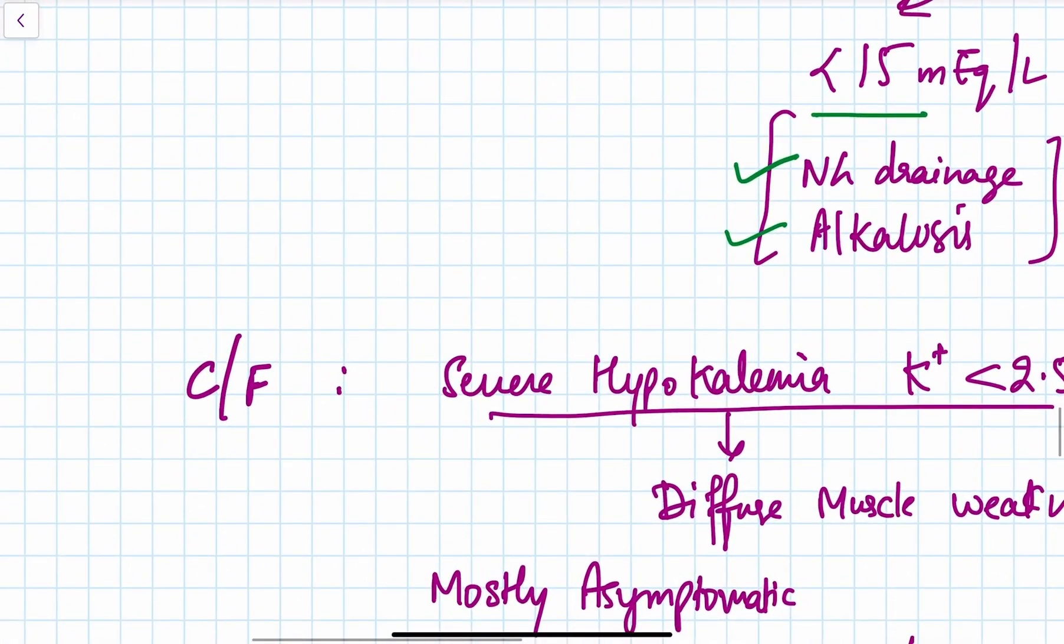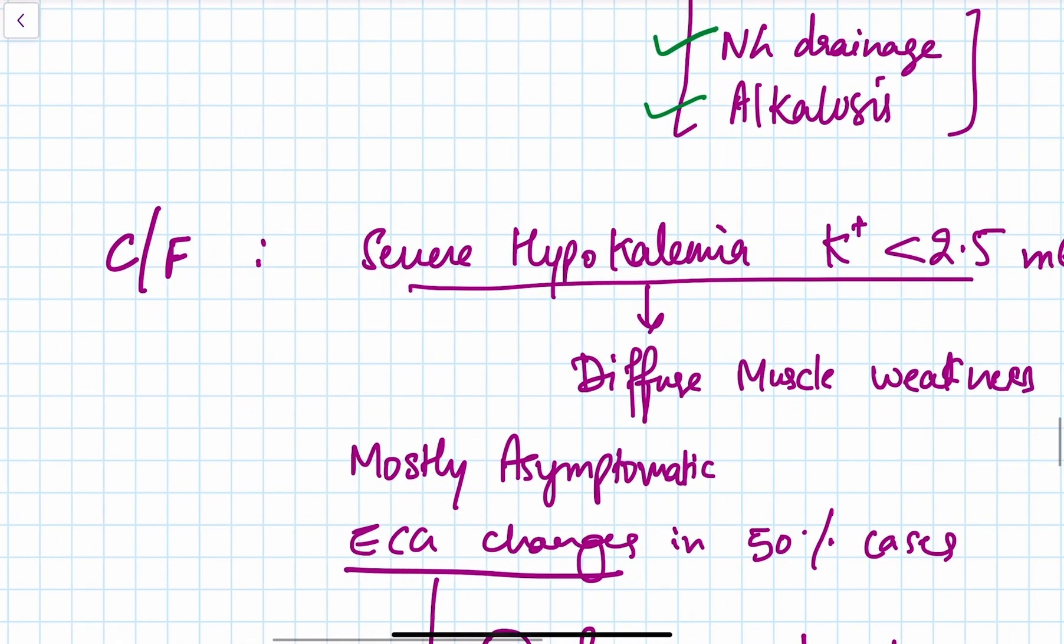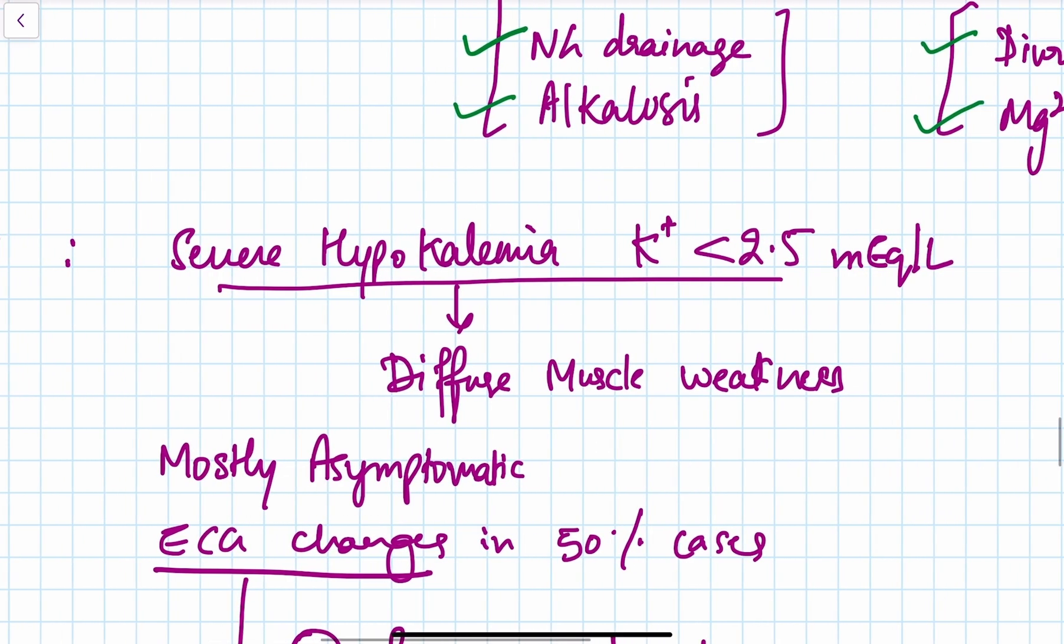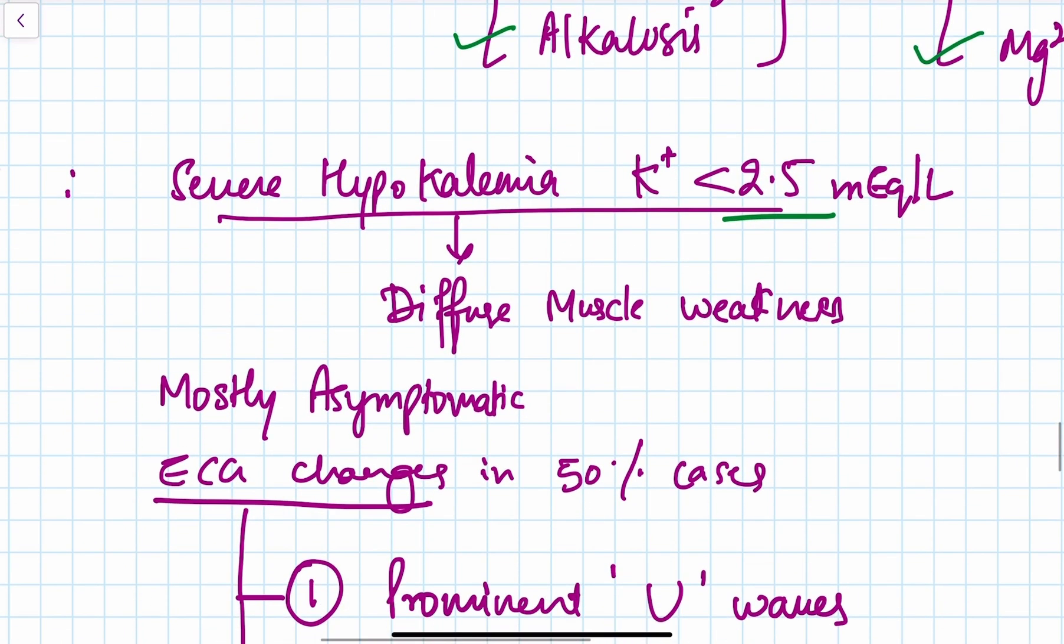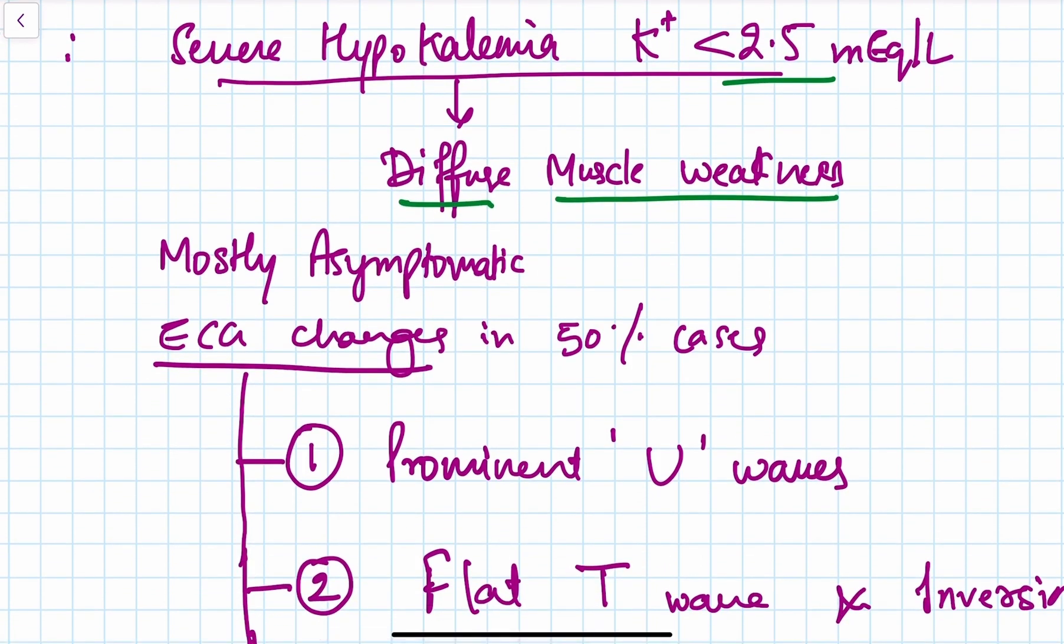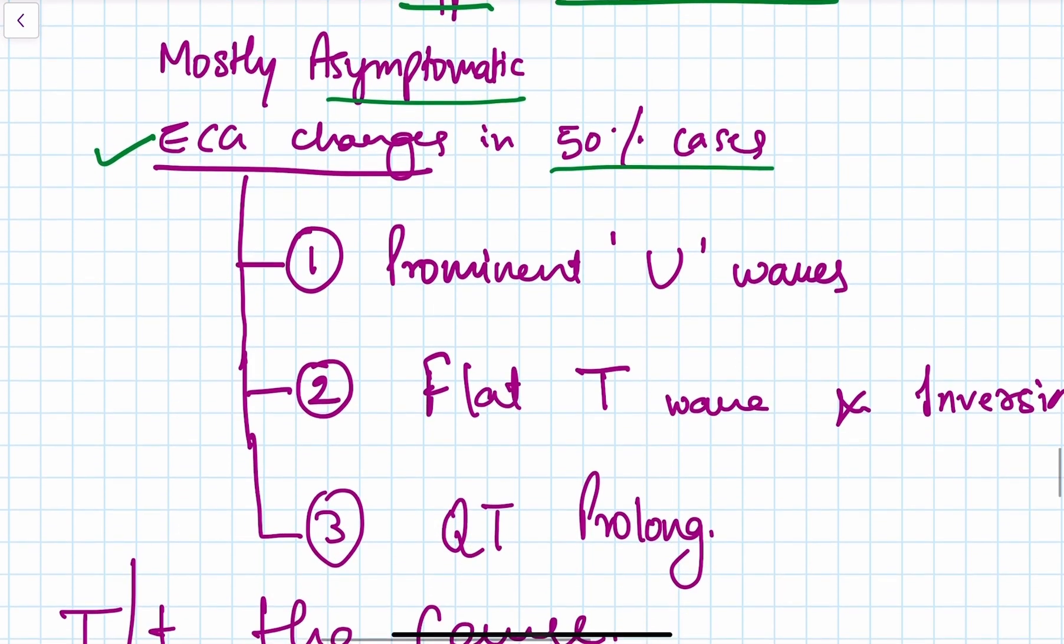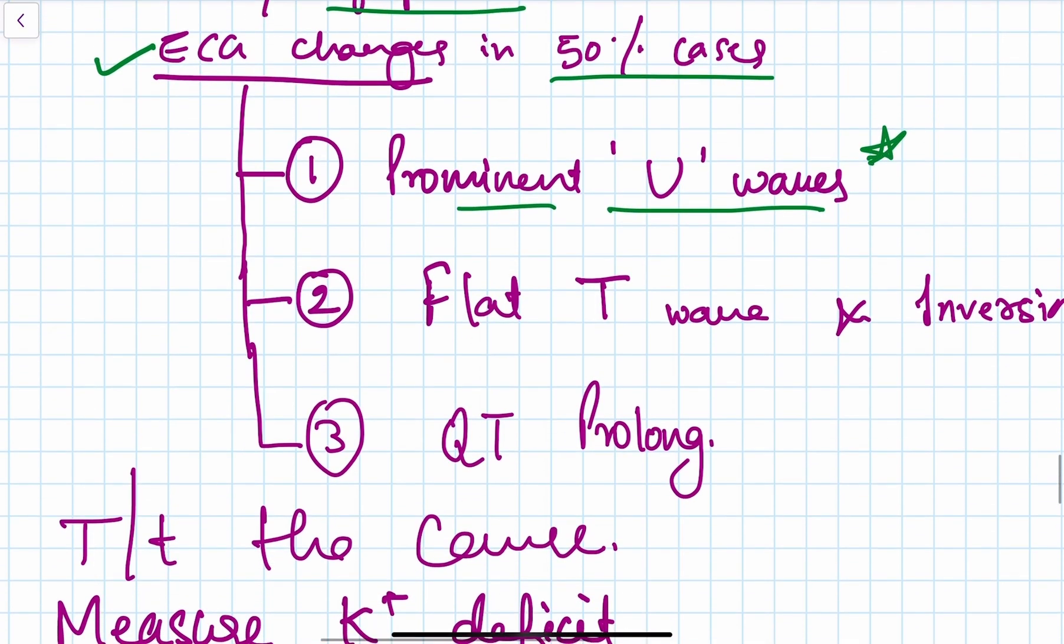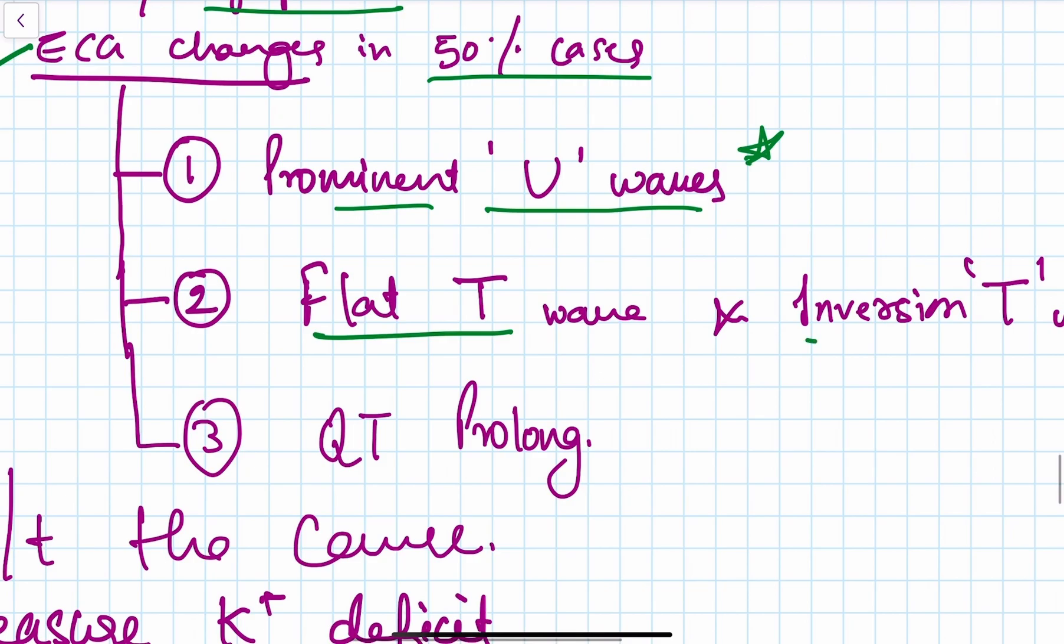Clinical features: In severe hypokalemia, when potassium is less than 2.5 mEq/L, there is diffuse muscle weakness. Generally, hypokalemia is asymptomatic, but in 50% of cases, ECG changes can be seen. These include prominent U wave—a classical question—flat T wave, and T wave inversion.